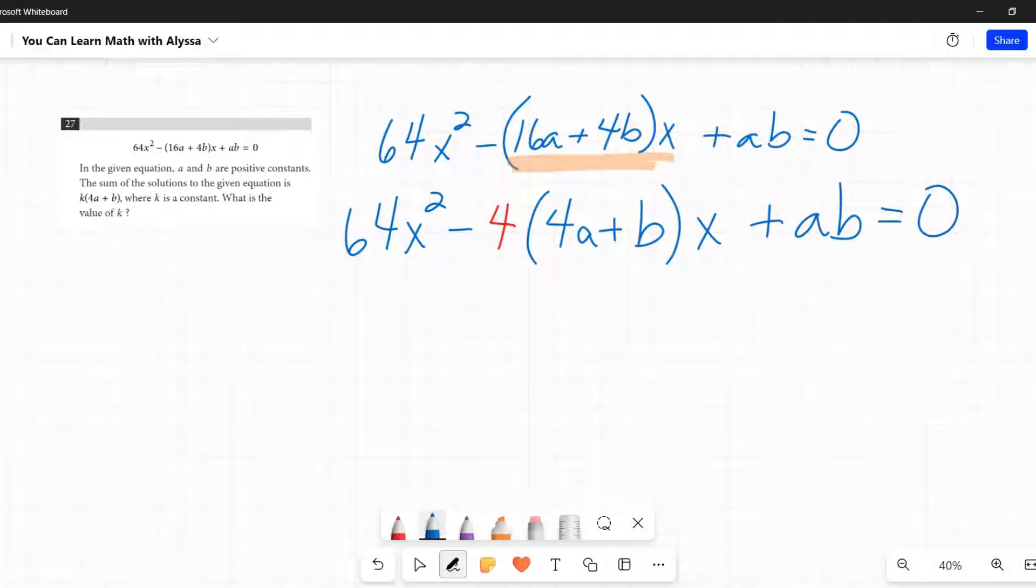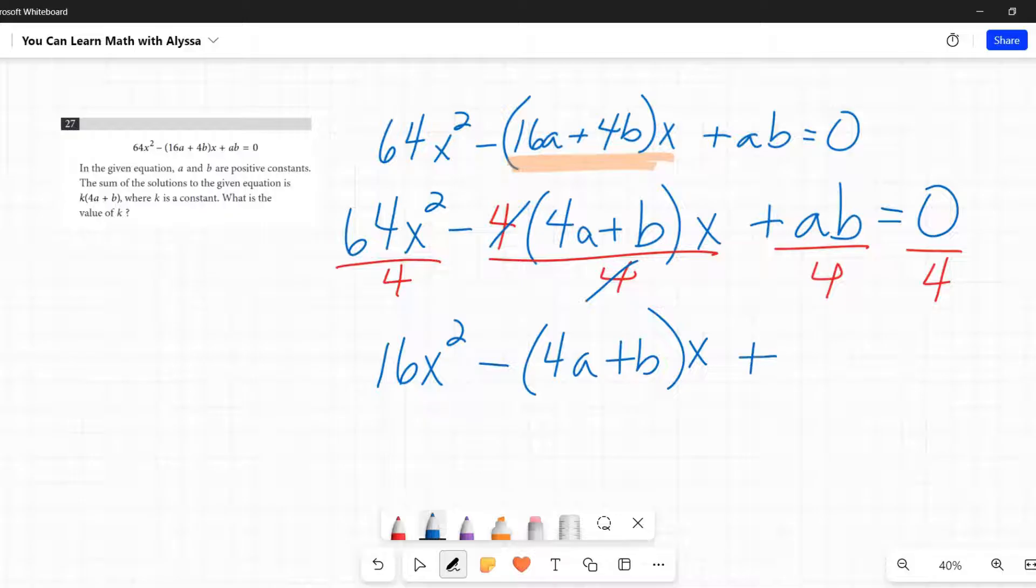Now I'm going to get rid of this four. I'm going to divide everything here by four, all three of these terms, and then the zero. That leaves me with 64x² divided by four is 16x², that four cancels out, so I am just left with (4a + b)x, plus ab over four, and then zero divided by four is just zero. The reason that I did this, and this is why I call it a eureka moment...